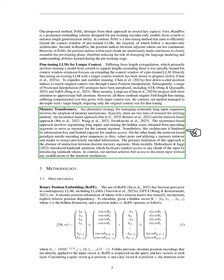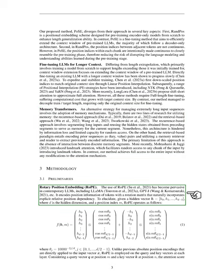Let's delve into our methodology. We use rotary position embedding, or RoPE for short. This technique is widely used in modern language models such as LLaMA and GPT-J. It works by encoding the position information of tokens using a rotation matrix, which naturally includes explicit relative position dependency.